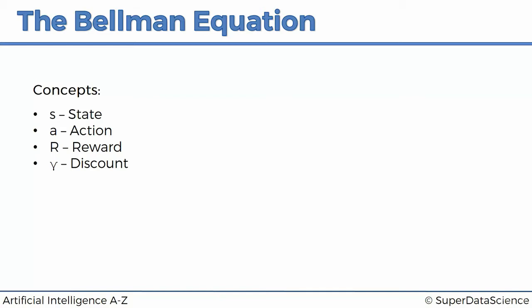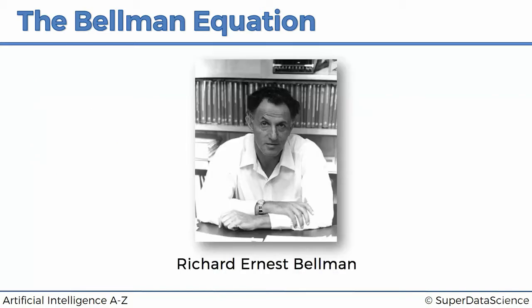So the person behind the Bellman equation is Richard Ernest Bellman. He was an applied mathematician and came up with the concept of dynamic programming, which we now call reinforcement learning, or which we call the Bellman equation. And in 1953, he came up with that concept — that's when the Bellman equation came to be.